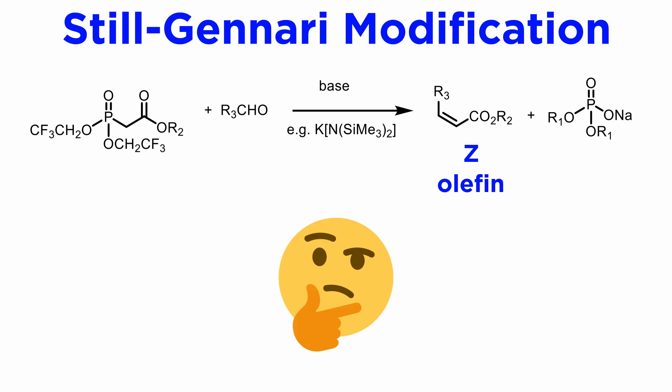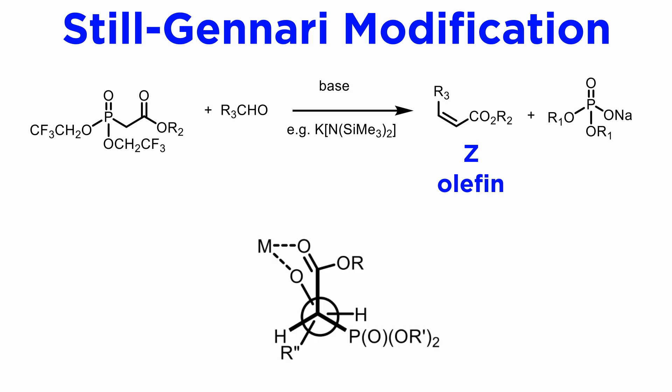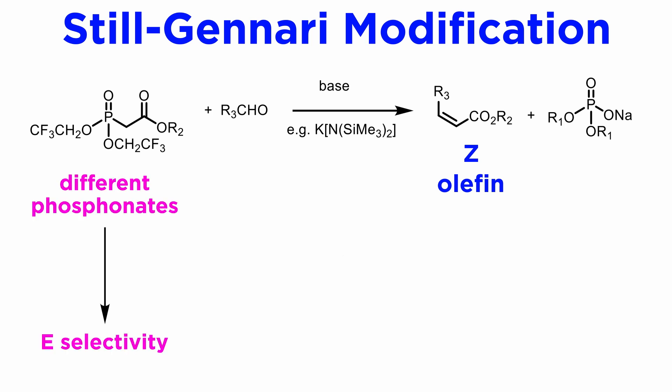It is not obvious why the erythro intermediate is favored to such a large extent over the threo. Some authors have proposed a coordinated approach to the beta-hydroxyphosphonate intermediate and a staggered alignment of the phosphonyl and alkyl groups, but this is rather speculative. After the surprising findings by Still and Gennari, many other phosphonate groups have been examined, and it is clear that there is a very smooth continuum in terms of E-selectivity as a function of phosphonate structure.